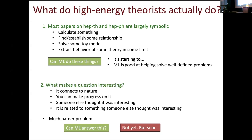A deeper question is: what makes a question interesting? Why are we asking these questions in the first place? The big picture is it connects to nature — we're understanding something about the universe we live in. But practically speaking, what makes a question interesting is more like: you can make progress on it, or someone else thought it was interesting and wrote a paper, so you spend six months understanding it and write a paper too, or it's related to something else someone did. This is a much harder problem that machine learning hasn't really touched on yet, but I think it will.